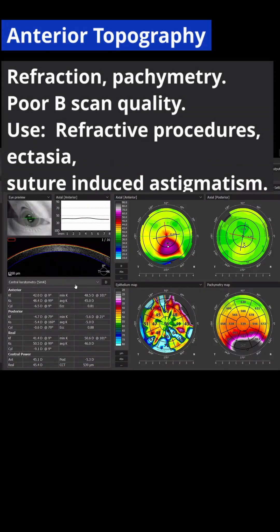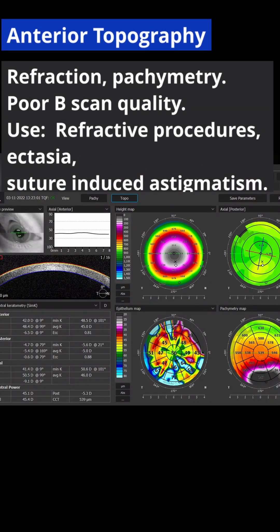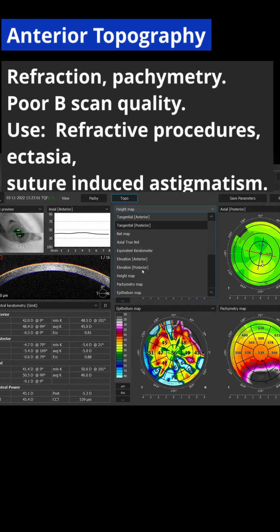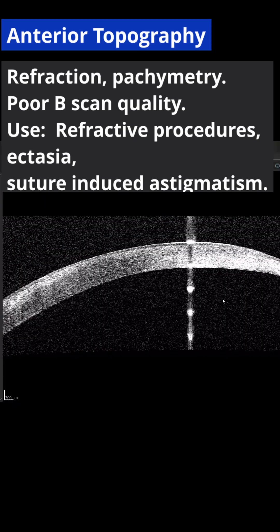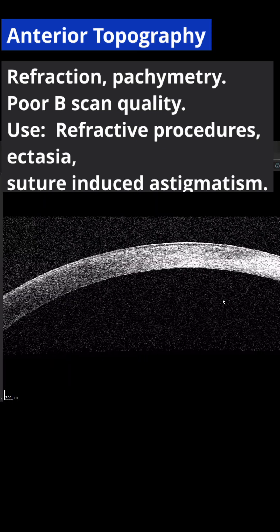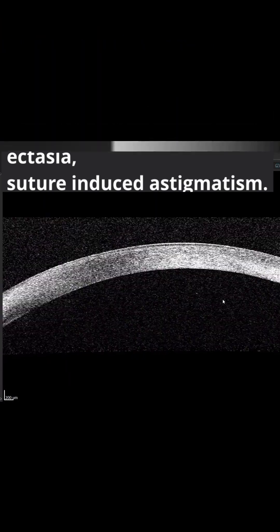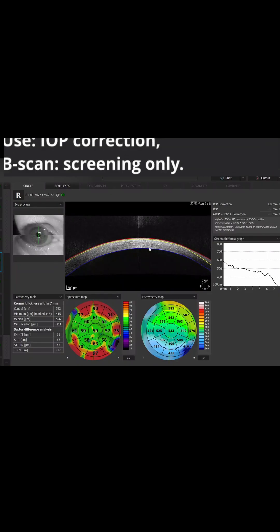Anterior topography offers you the refraction maps, pachymetry, and elevation. It has poor B-scan quality, and is useful mostly for ectasia screening and refractive procedures.